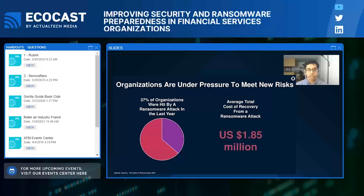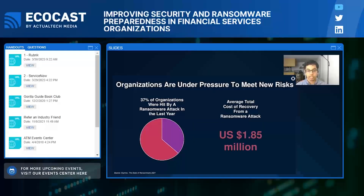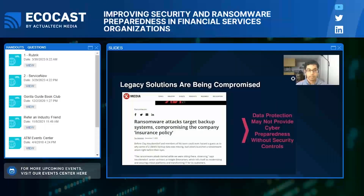So why is ransomware on the rise? A few reasons. With consumers and businesses operating in a more remote and distributed manner, the attack surface has just gotten bigger and bigger — making it easier for attackers to get in. There's also a relatively new ransomware-as-a-service economy and business model, and these attackers keep getting more and more sophisticated. They've honed their methods to execute double extortion attacks, whereby sensitive data is exfiltrated under the threat of release. Attackers often go after a victim's backup systems because the backup is your last line of defense — and without proper security controls in place, backups are vulnerable.